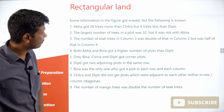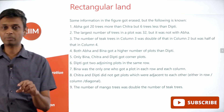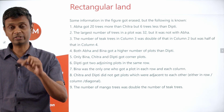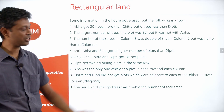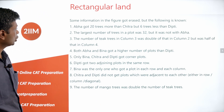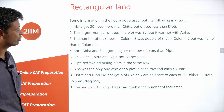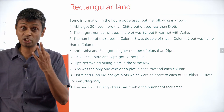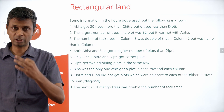Some information in the figure got erased, but the following is known — it's a classic puzzle. There are 12 cells, each with two entries: a number and a letter. Ava got 20 trees more than Chitra but six trees less than Deepti, linking three of the total tree counts with one variable, which could be very useful.